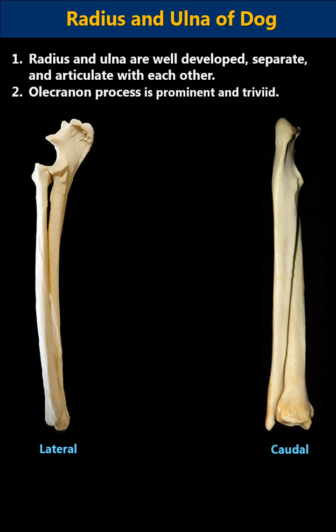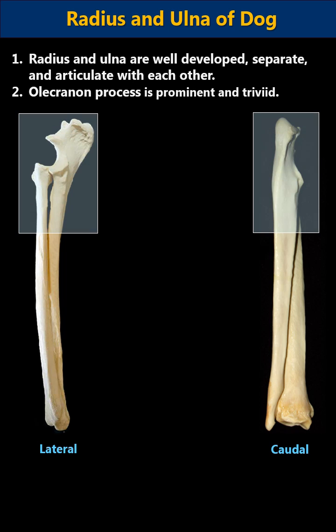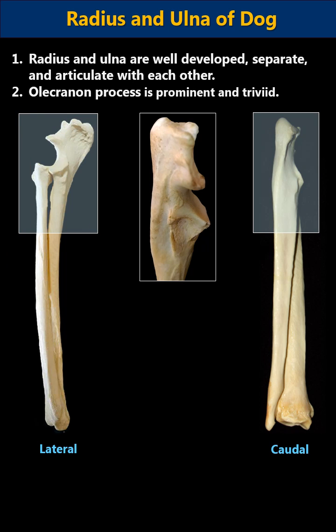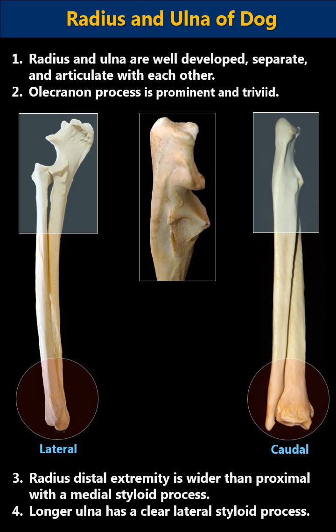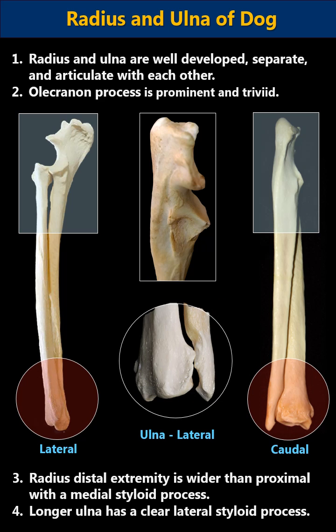In dog, the radius and ulna are well developed, separate, and they articulate with each other. The olecranon process is prominent and trified. The radius distal extremity is wider than the proximal extremity with a clear medial styloid process. The ulna is longer and has a clear lateral styloid process.